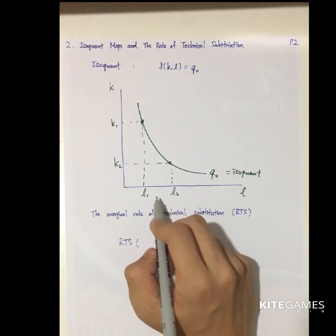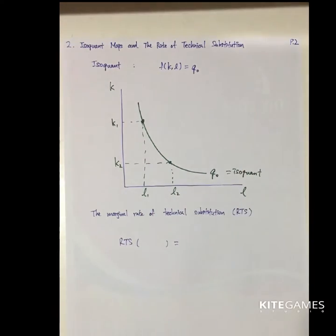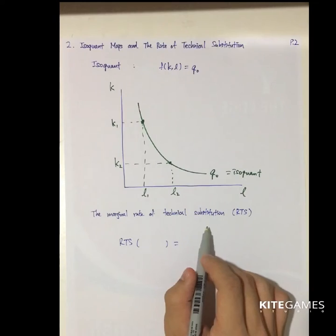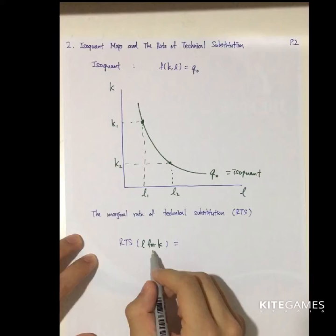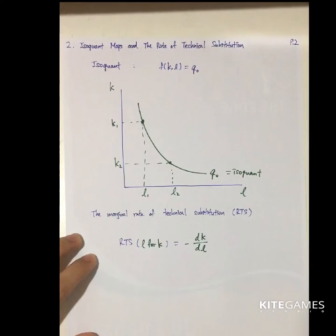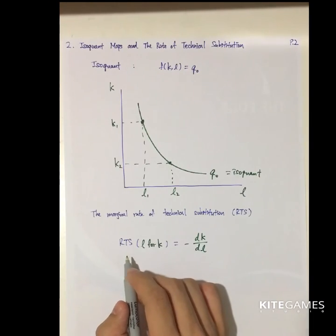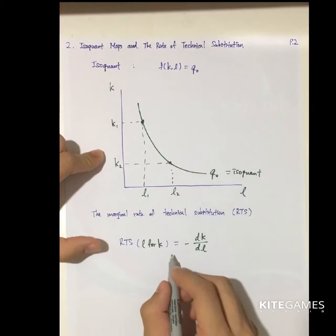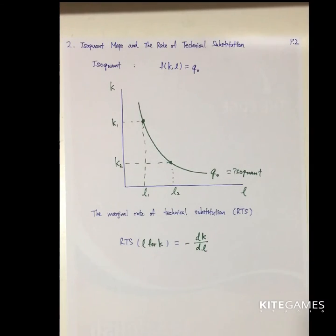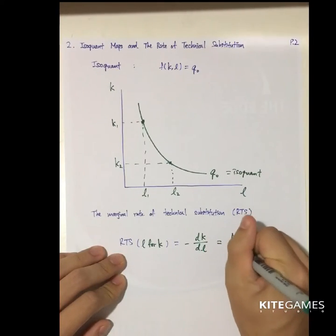So the isoquant is the combination of K and L that can create the same amount of output. If you give up some labor, you need to add some capital; if you give up some capital, you need to add back some labor. Next is the concept of the marginal rate of technical substitution. Similar to the marginal rate of substitution in utility maximization, in the production function you have the RTS. The RTS of L for K is defined as the negative slope of the isoquant — negative DK/DL — the number expressing how much capital must be given up if you want to add one more unit of labor to keep the output level constant.